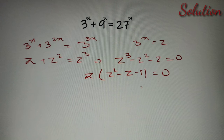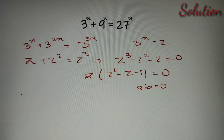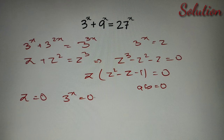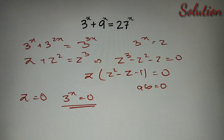We know that if a times b equals zero, then either a equals zero or b equals zero. Let us first consider a equals zero, which implies z equals zero. Since we have taken z as 3 raised to the power x, this gives us 3 raised to the power x equals zero. We know that 3 raised to the power x cannot equal zero for any value of x, so this is not a solution.